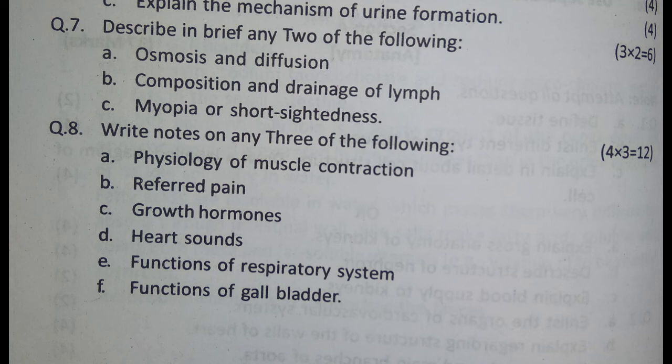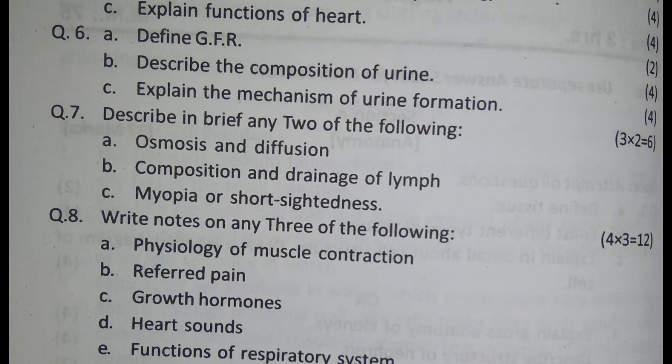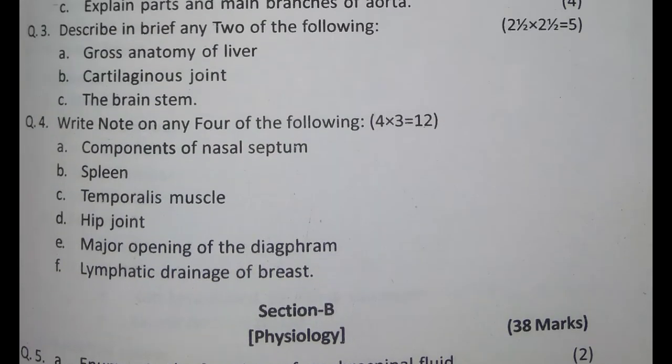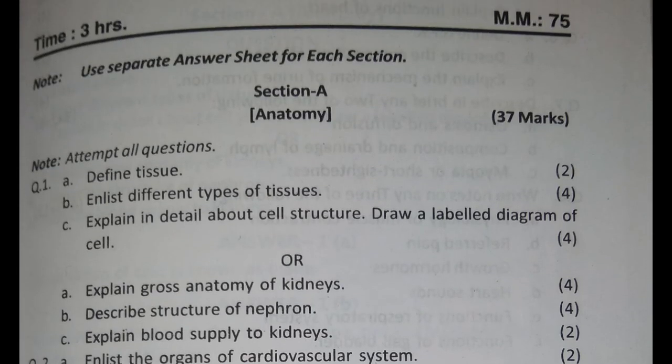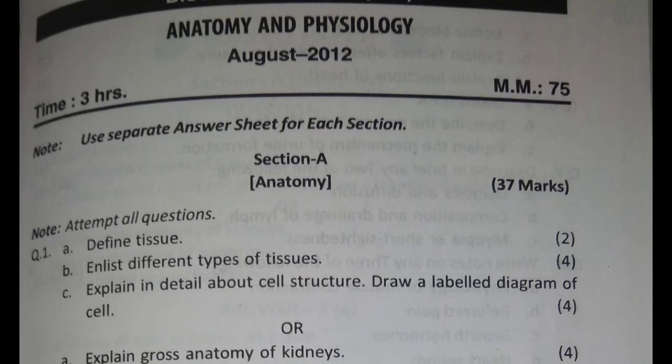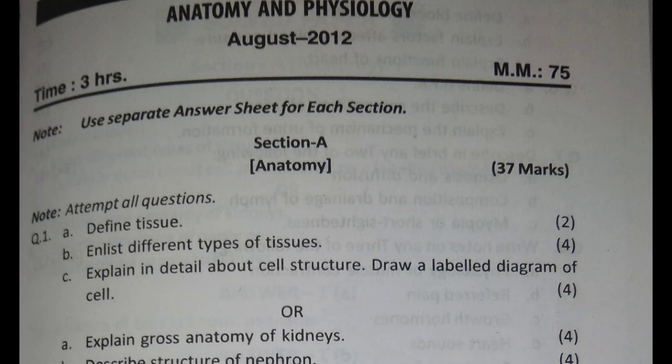Question 8: Write short notes on any three of the following, 12 marks — physiology of muscle contractions, rapid pain, growth hormones, heart sounds, functions of respiratory system, functions of gallbladder. This question paper is for B.Sc. Nursing 1st year students, August 2012. Thank you for watching my video.